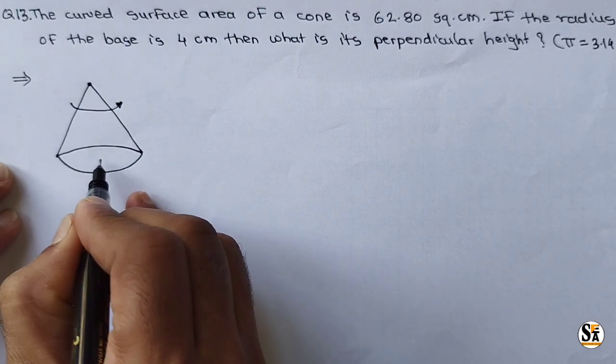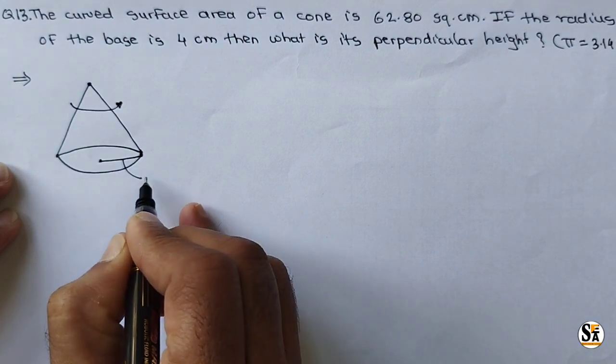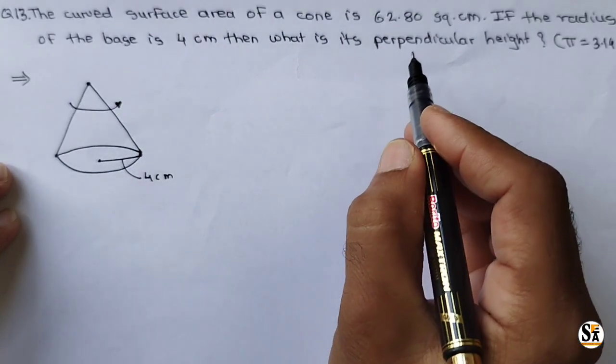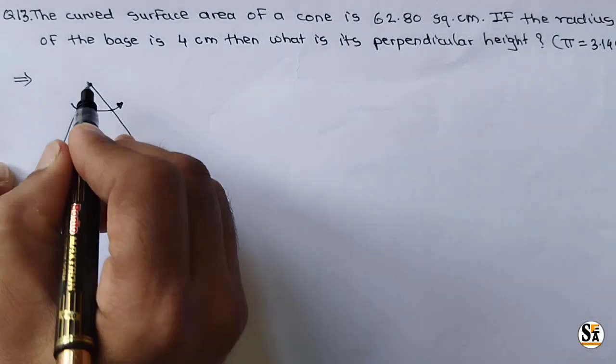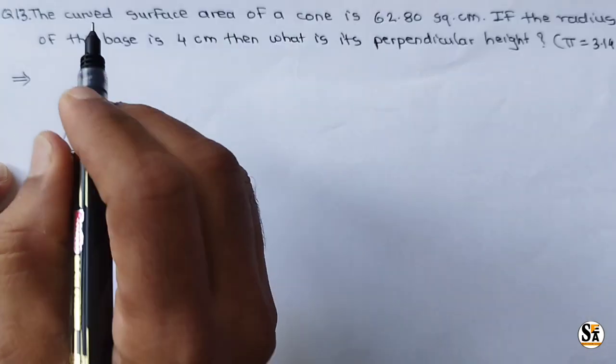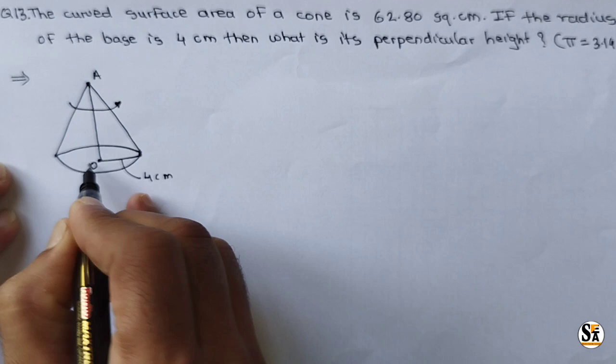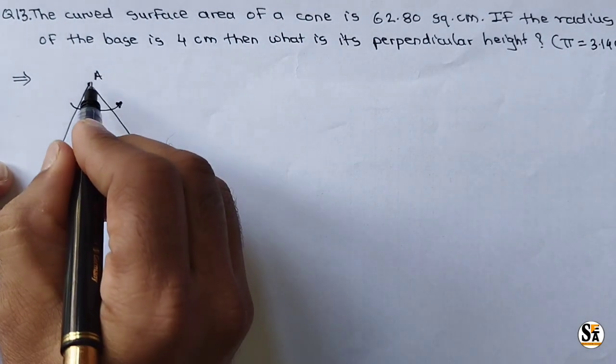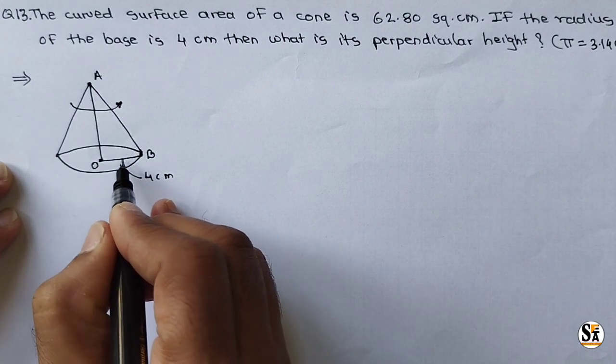That is this point. If this is the origin, then this point to this point, this radius is given as 4 centimeter. And we have to calculate perpendicular height. Perpendicular height of cone is this distance. If this is A, if this center O, and if we consider this point as B, then we have to calculate AO. Radius is given 4 centimeter.